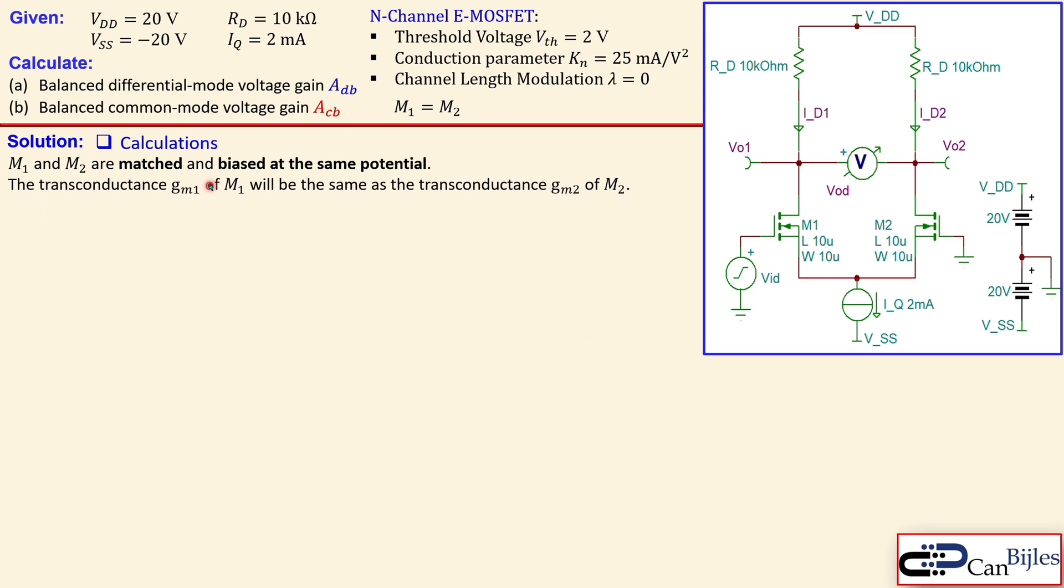So the transconductance of M1, which is gm1, will be the same as that of the transconductance of M2. So defining just one gm, gm1 equals gm2 equals gm, and that will be calculated using this. This is only valid in the saturation region of operation.